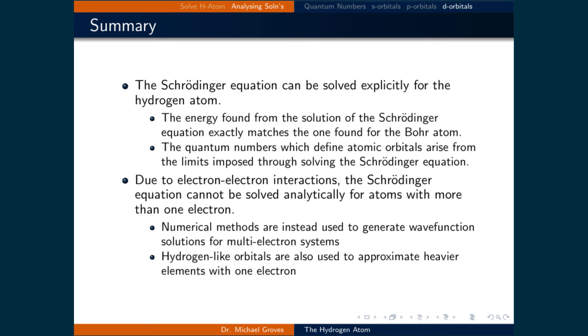However, due to electron-electron interactions, the Schrödinger equation cannot be solved analytically for atoms with more than one electron. Instead, what we do is we use numerical methods to generate wave function solutions for multi-electron systems. However, we can use hydrogen-like orbitals to approximate heavier elements with one electron.